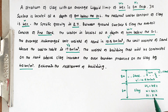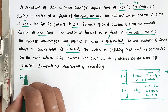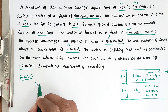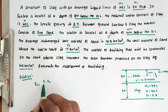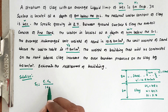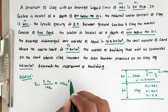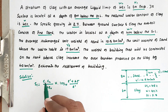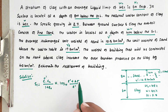From that we have to find out the consolidation settlement. The formula for consolidation settlement is: SC = C × CC / (1 + E₀) × H × log₁₀[(σ' + Δσ) / σ']. For that, C = 1. We have to find CC, E₀, and σ₀; Δσ is given.